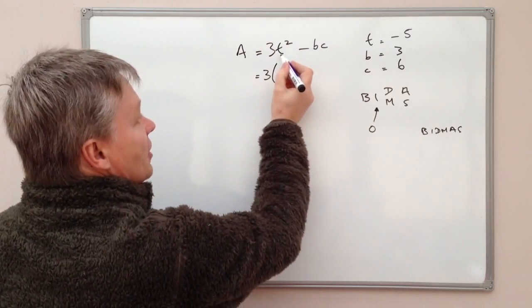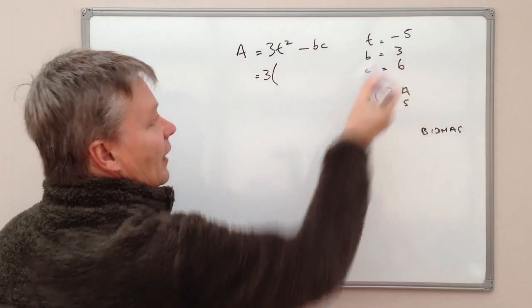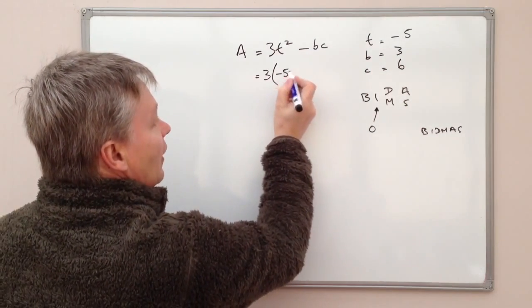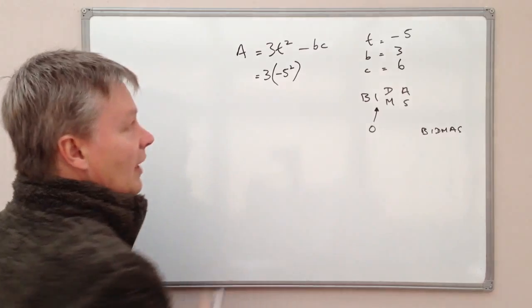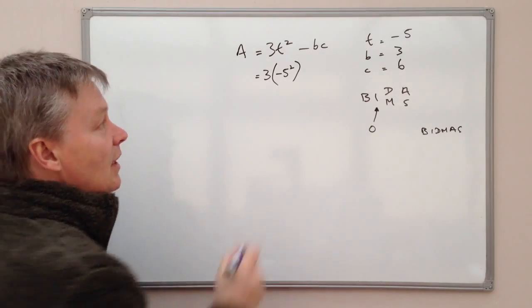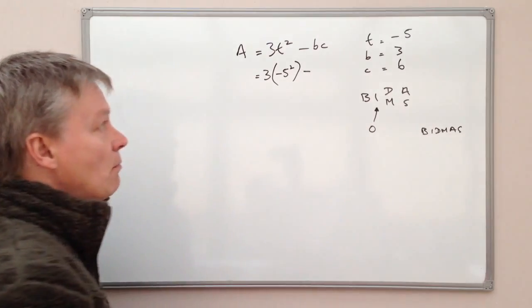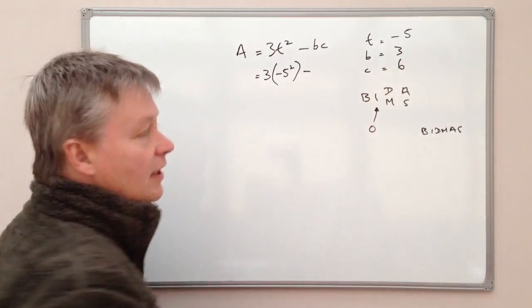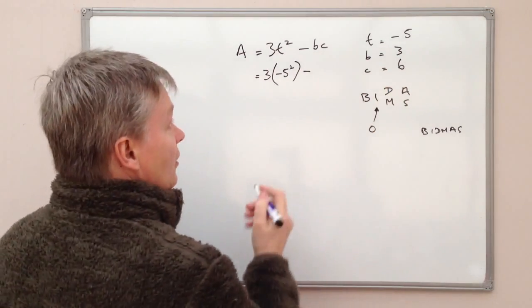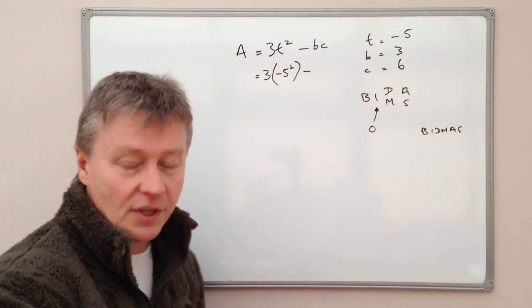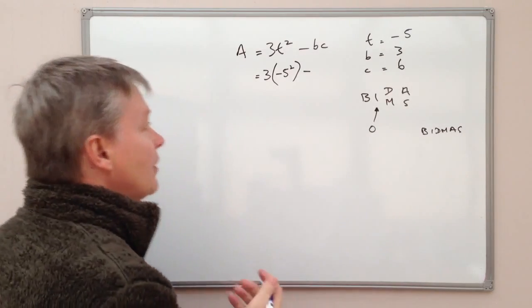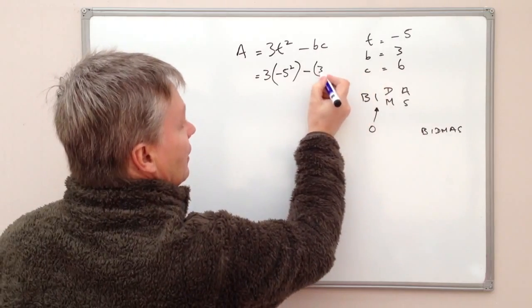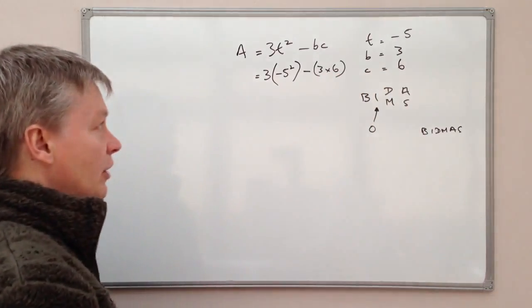So I have T squared. Well T is a value of minus 5, so I'm going to put minus 5 squared in brackets there. The next thing I'm going to do is I'm going to put minus and then I've got a value of B which is 3 and a value of C which is 6. So that's OK. And again, just to remind myself, I'm going to put it in brackets and keep it to one side. So I've got 3 times 6.